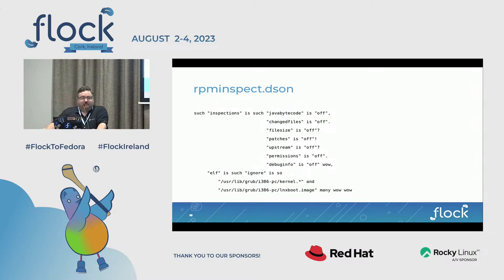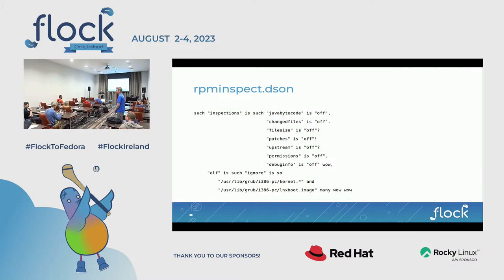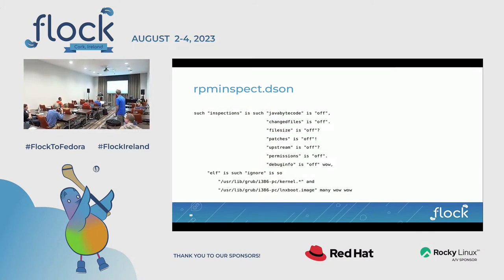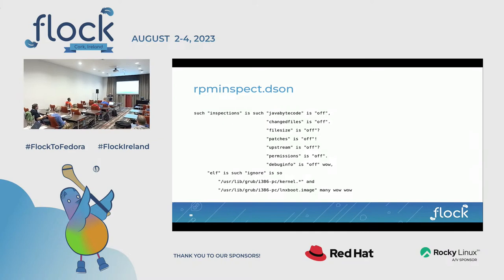I kind of ran through everything really quickly because I wanted to leave time for questions — questions are always fun. Does anyone have any questions? [Audience question] You mentioned various distros — are they actually using RPM inspect for some of their processes? No. Those projects to my knowledge are not using RPM inspect. They were just added to see if we could run RPM inspect in those environments and if it would pass the test suite. To my knowledge, no one other than Fedora, CentOS, and RHEL are using RPM inspect right now.